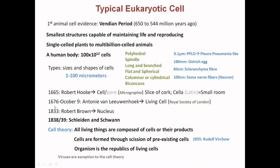In 1676, Antonie van Leeuwenhoek wrote to the Royal Society of London that he had evidence that the cells he was visualizing were living in nature. In 1833, Robert Brown first proposed the presence of the nucleus and observed it inside the cell. Then came the cell theory: in 1838 Schleiden proposed it, followed by Schwann in 1839, stating that all living things are composed of cells or their products. In 1855, Rudolf Virchow added that cells are formed from pre-existing cells. Viruses are exceptions to the cell theory.